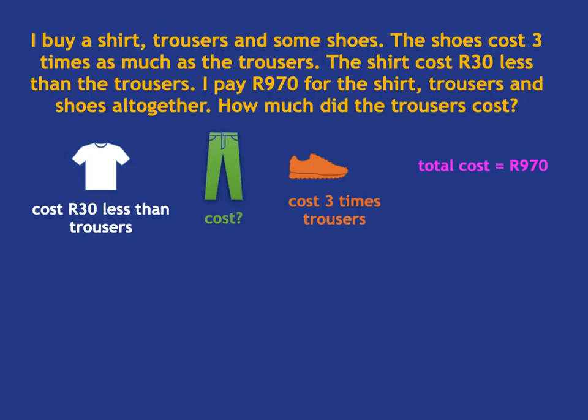Now I'm going to work towards writing an equation to represent this scenario. I'm going to choose to call the cost of the trousers x. The reason I'm doing this is because that's what we're trying to find out — it's the unknown. It's also useful to start with the cost of the trousers because the cost of the shoes and the cost of the shirt are both related to the cost of the trousers. So the very first thing I write down is: let the cost of the trousers be x.